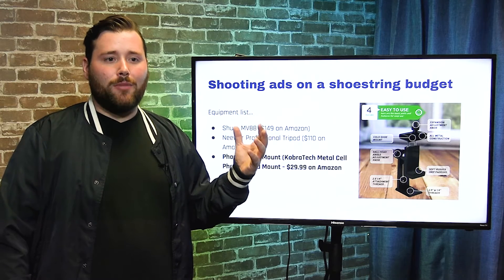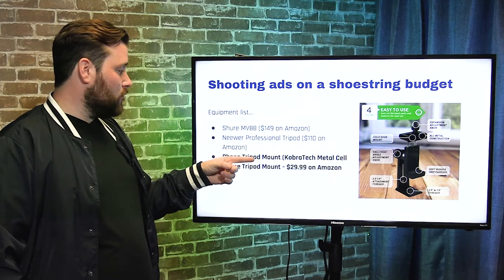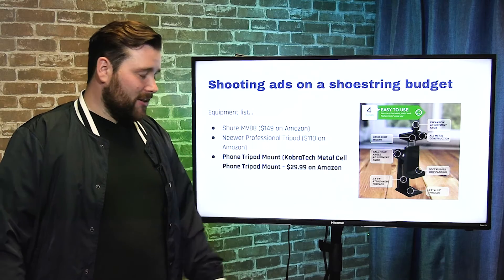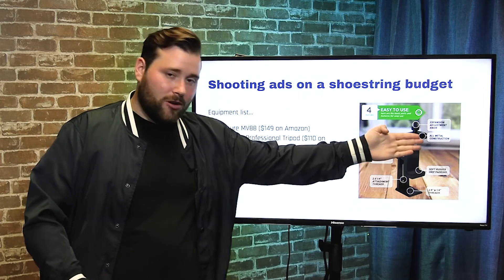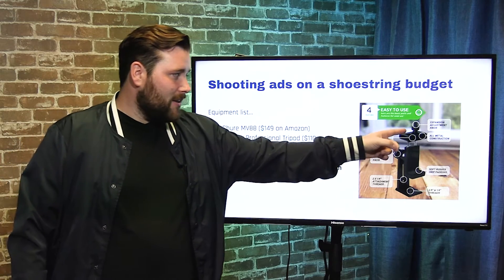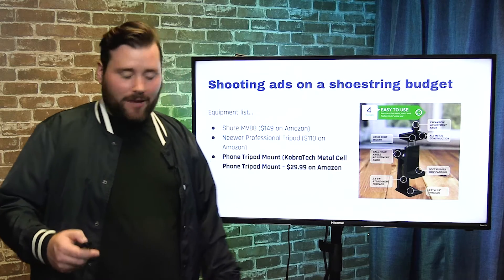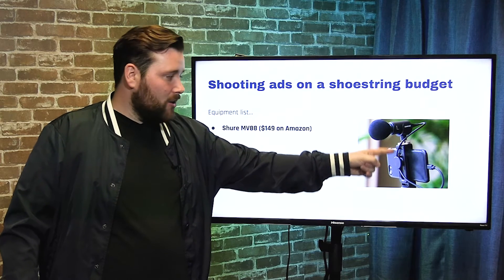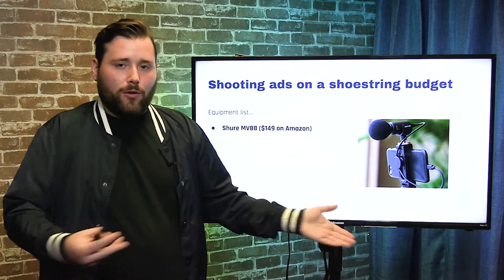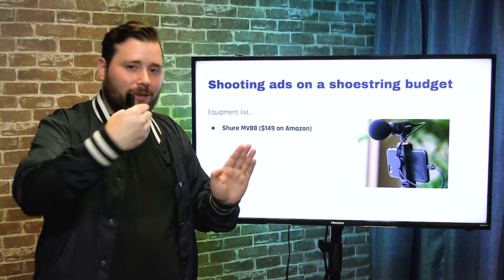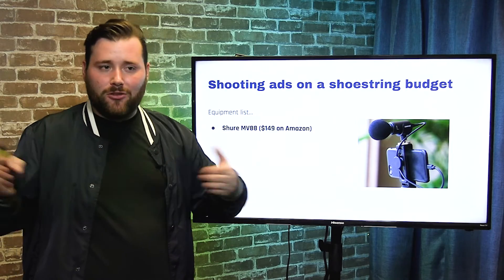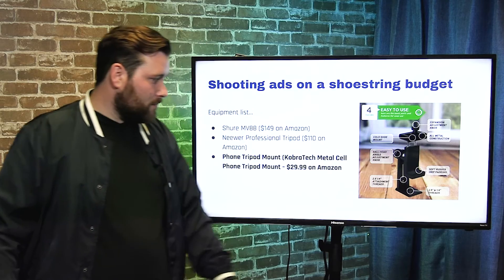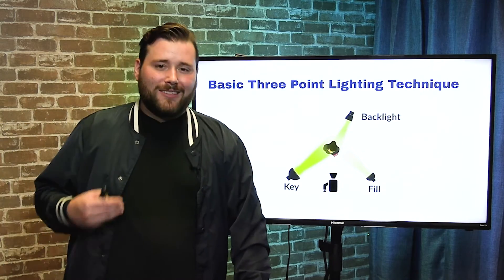You're also going to need a phone tripod mount. We recommend the Cobra Tech metal cell phone tripod mount for $29.99 on Amazon. You can get cheaper ones for $7, but the reason to spend more is this one has a cold shoe mount. If you get the Shure microphone, you need somewhere to mount it on the phone mount — right here — so it's pointing directly at your mouth. Without that cold shoe mount, you'd have to tape it somewhere and audio quality would suffer.